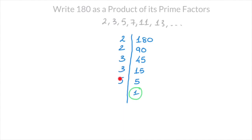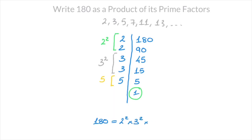Focusing on the left-hand column, we can see that 180 equals 2 times 2 times 3 times 3 times 5. We have two 2s, so that's 2 to the power of 2. We also have two 3s, so that's 3 to the power of 2. And we have one 5, which is 5 to the power of 1, but we simply write 5. So this left-hand column allows us to write that 180 equals 2² times 3² times 5. And we're done — we've just written 180 as a product of its prime factors.